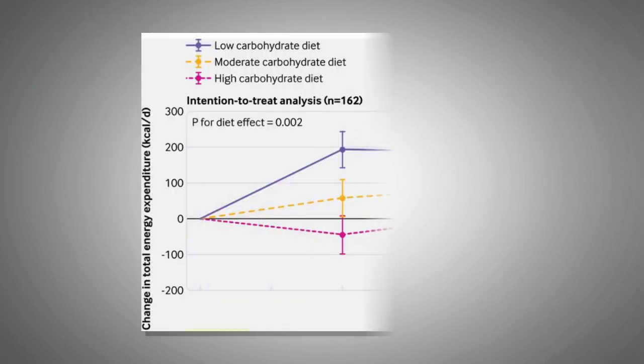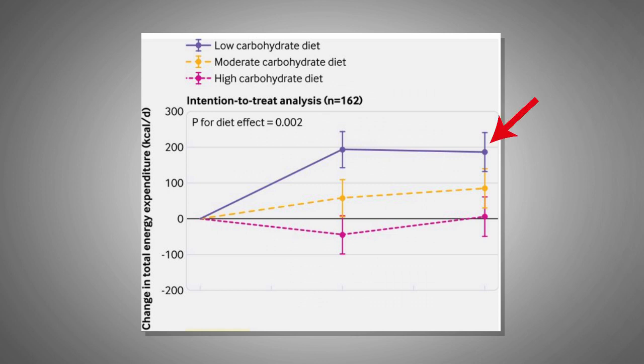As you can see in this graph, switching to a low-carbohydrate diet and therefore a high-fat diet boosted the metabolism greatly. Volunteers who consumed only 20% of their calories from carbohydrates burned on average 200 calories more per day compared to the high-carb diet group.